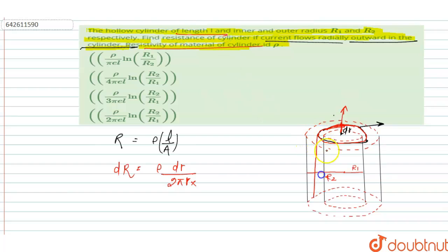Because in this question, given the length is L. This length L, then total area looks like this. This is the total area having the length L and this length is equal to 2 pi r at distance r.